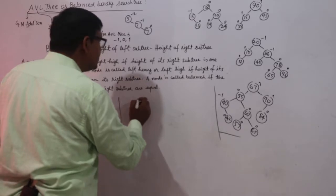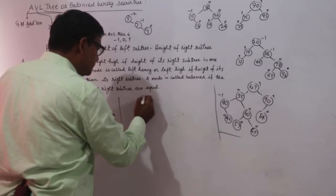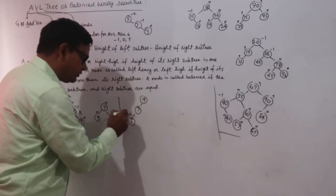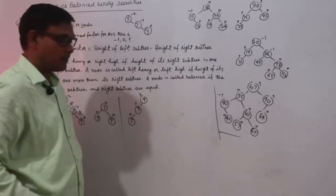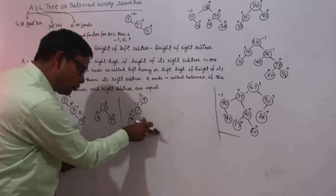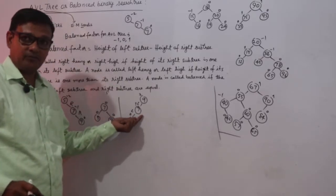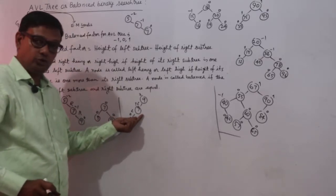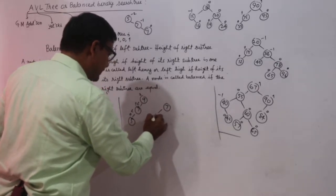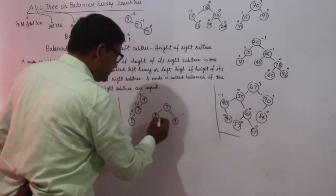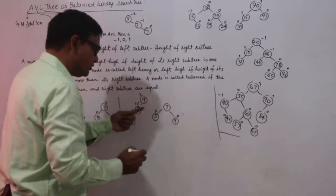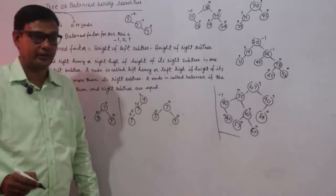If values come as 9, 7, then 5, balance factor is 0, 1, and 2. This is an L-L case: left, left. I will rotate 9 in clockwise direction and make 7 the root node. So it will be 7, with left child 5 and right child 9. Balance factor of 5 is 0, of 9 is 0, and 1 minus 1 gives 0 balance factor for node having value 7.